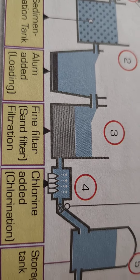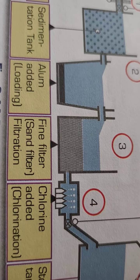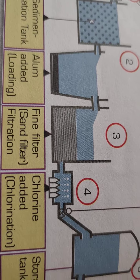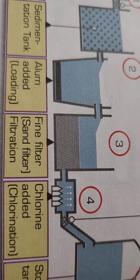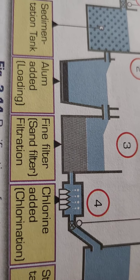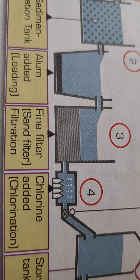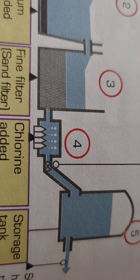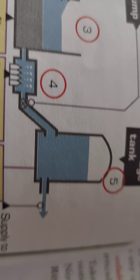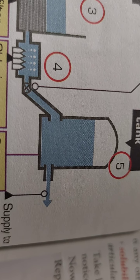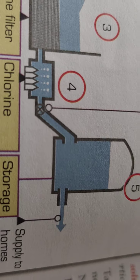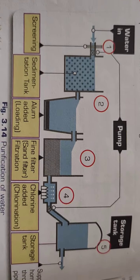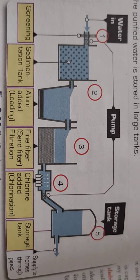After sand filtration, the clean water is allowed to pass through the chlorine tank, where chlorination is done. In this tank, chlorine tablets are added to the water to kill the microorganisms or germs present in it. After that, the purified water is stored in a storage tank, from where it is then ready for supply.